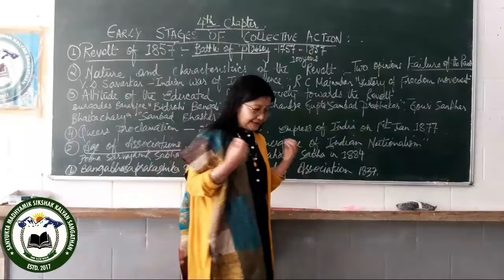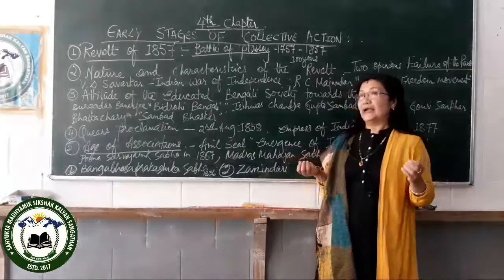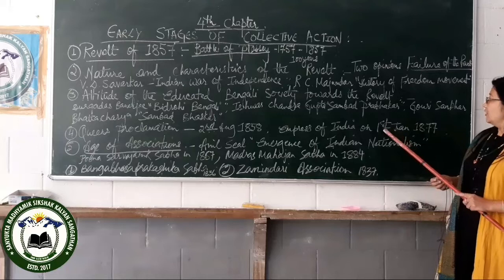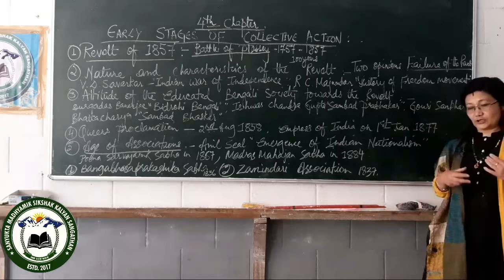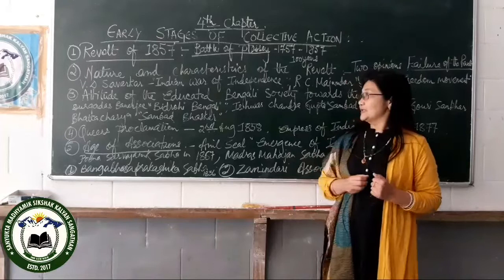Despite all this, the British called a grand meeting in Delhi called the Delhi Darbar. It was at the Delhi Darbar that in 1877 Queen Victoria became the Empress of India on 1st January 1877. This is how the British, slowly from the Battle of Plassey onwards, became powerful and established their sway over the whole of India. This concludes the topic of the Revolt of 1857.